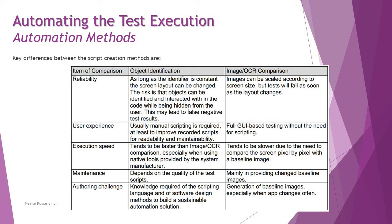Regarding user experience and UI/UX components: for object identification, manual scripting is usually required at least to improve the recorded script for readability and maintainability, whereas image-based testing is full GUI-based testing without the need for scripting. On execution speed, object identification is expected to be faster than image or OCR comparison, especially when using native tools provided by the system manufacturer, since image comparison is done pixel by pixel against the baseline, making it slower.